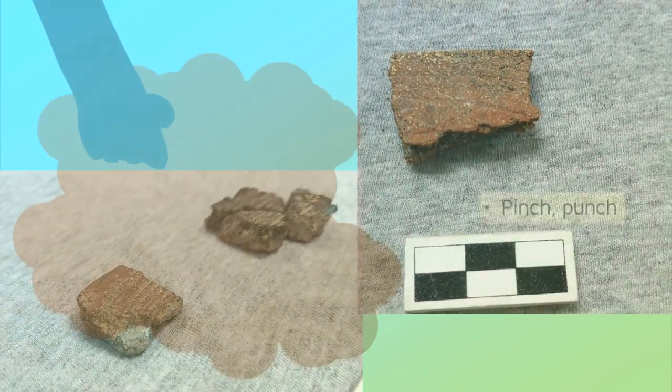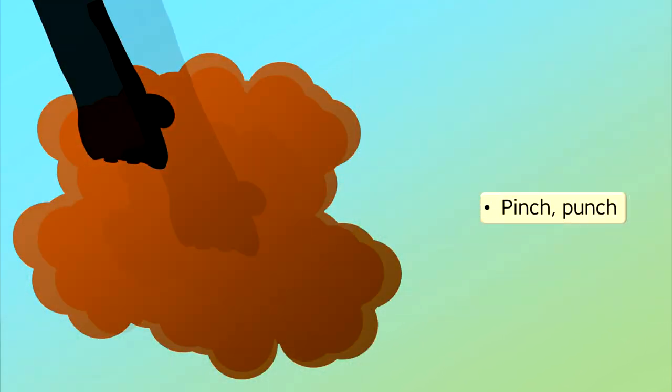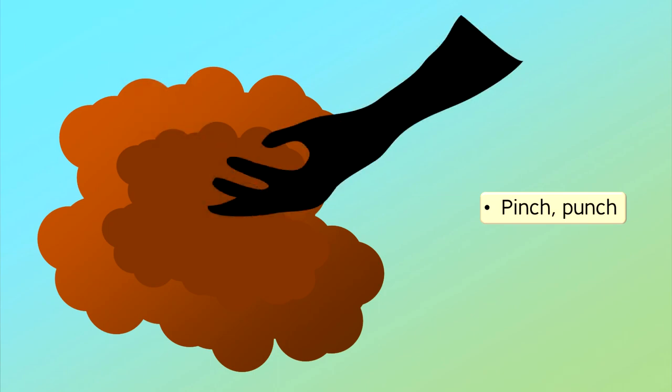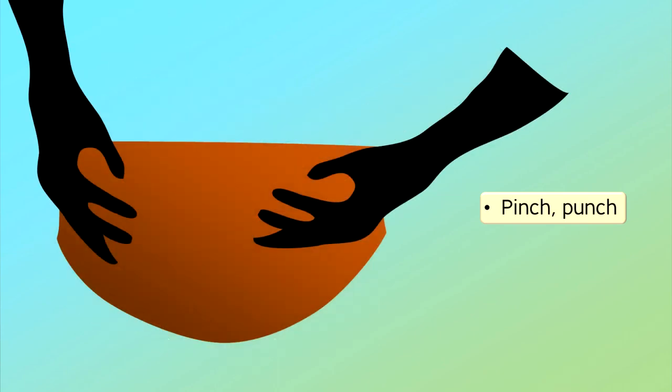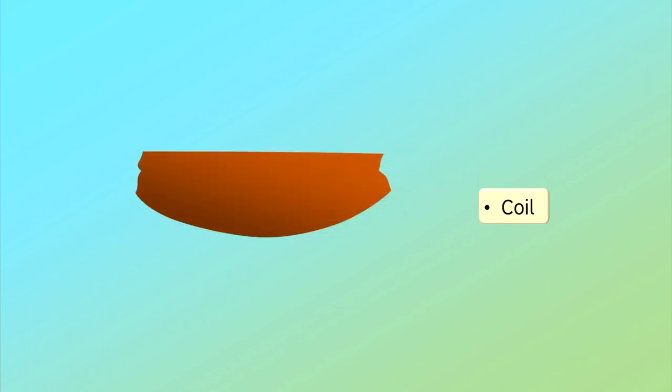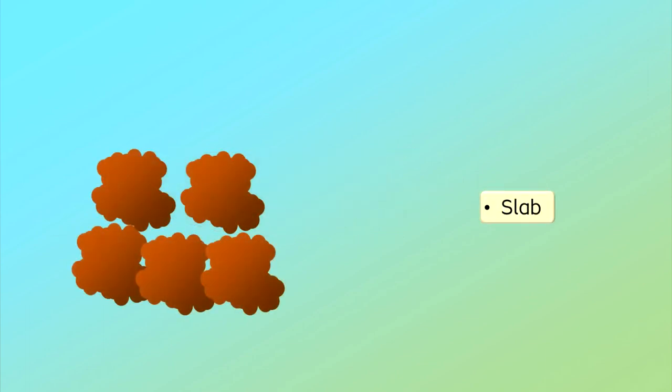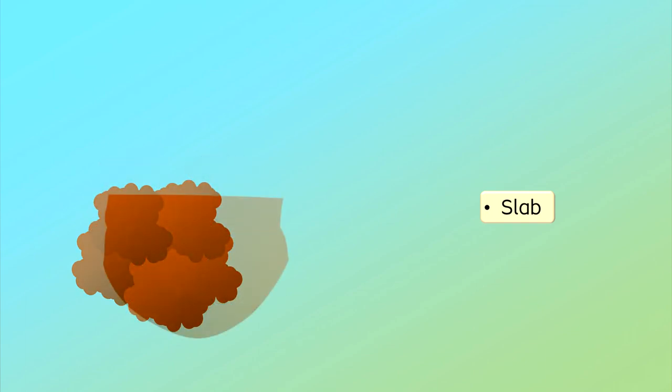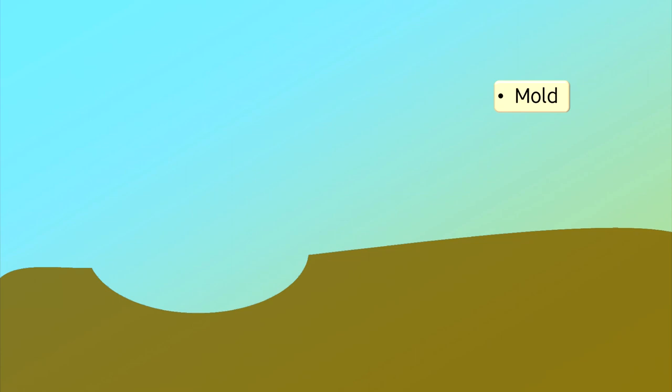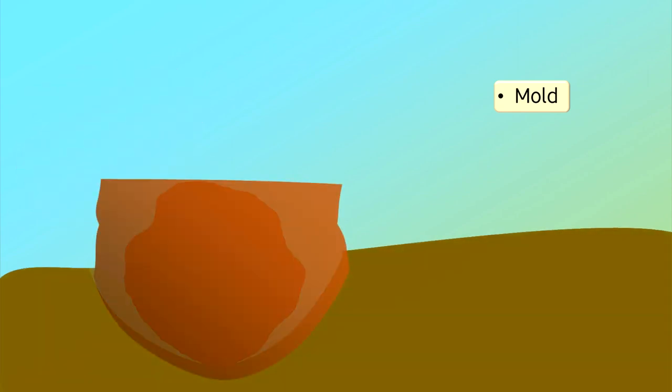These techniques included pinching and punching of the clay into the desired shape, building elongated coils into various forms, creating slabs that could be conjoined or folded together, or building a mold perhaps in the ground that could be filled with the clay in the shape of the pottery vessel.